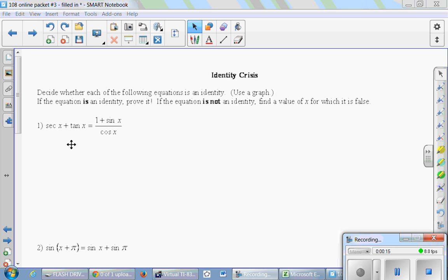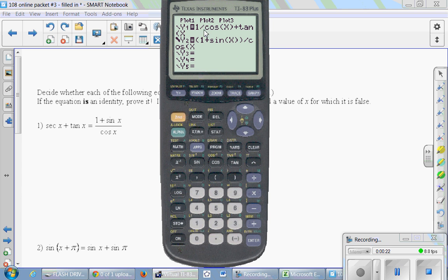Secant x plus tan x equals 1 plus sine x over cosine x. I have no intuition about whether or not that might be true. So I've typed in both equations, both expressions I should say, left-hand side and the right-hand side separately. Notice that I've also made the one thicker. I'm in radian mode, and I'm just going to look at the standard window.